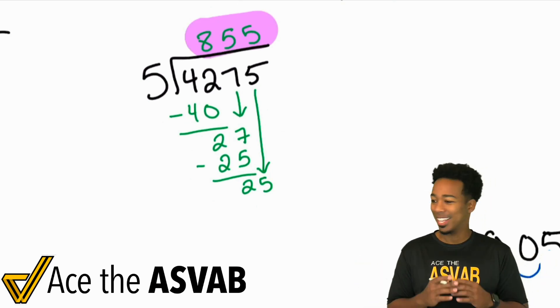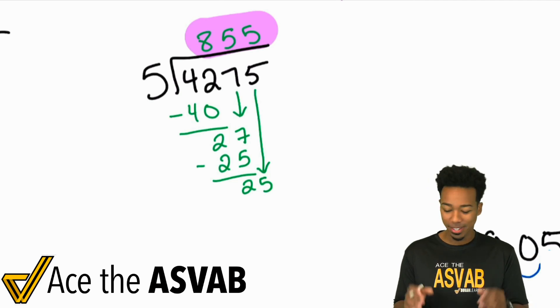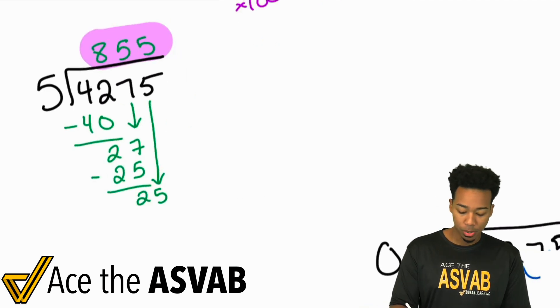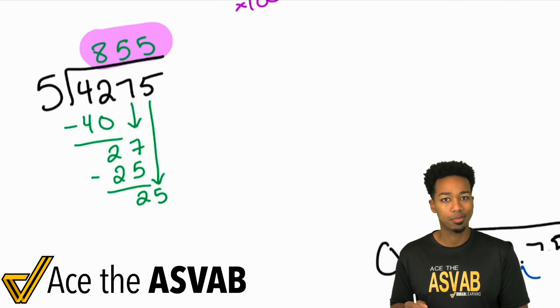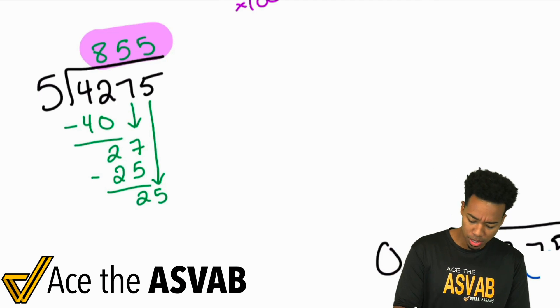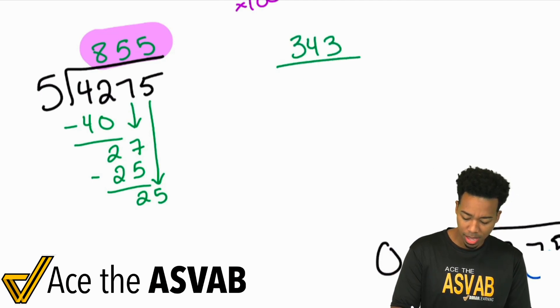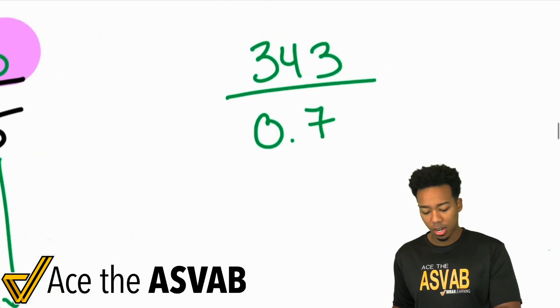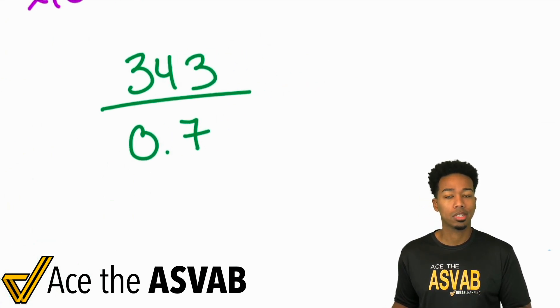I'm going to show you one more example here. Again, this is going to be super clean. Watch this. So let's go ahead and say we have something to the effect of, let's say we have 343 and we're dividing that by 0.7. I'm going to show you how to take care of this even easier as well.